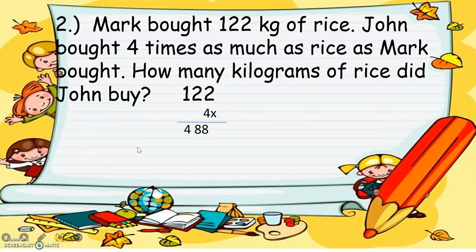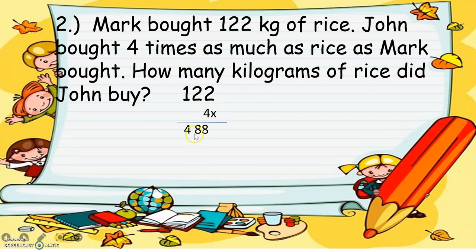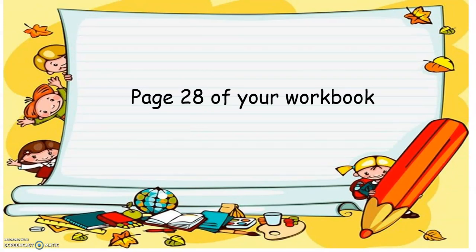Example number two: Mark bought 122 kilograms of rice. John bought four times as much rice as Mark. How many kilograms of rice did John buy? So that is 122 times 4. Four times 2 equals 8, 4 times 2 equals 8, 4 times 1 equals 4 — so the answer is 488.